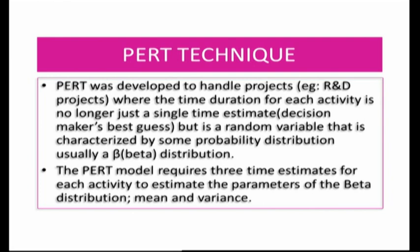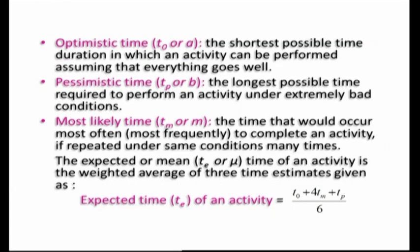The PERT model requires three time estimates for each activity to estimate the parameters of the beta distribution, which are the mean and variance. So far we have been using just one time estimate for each activity, represented in brackets next to the activity in the network diagram. In PERT, we will have more than one time estimate for each activity. The three time estimates are the optimistic time, the pessimistic time, and the most likely time.